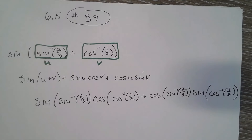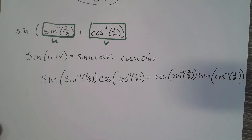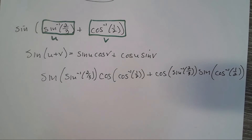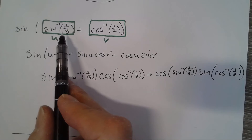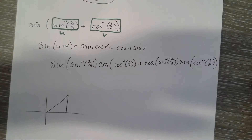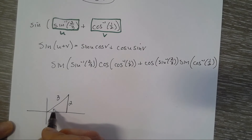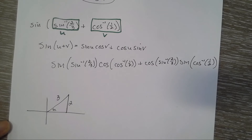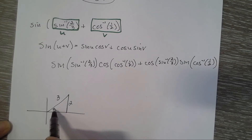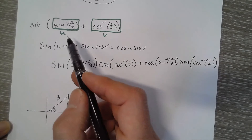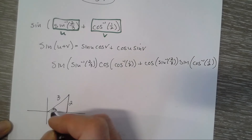Whatever that equals is our answer. We have four sub-problems and will need two different triangles. For u: what angle has a sine of two-thirds? This angle right there has a sine of two-thirds, so we call that angle u.